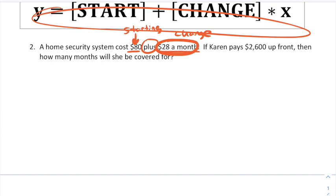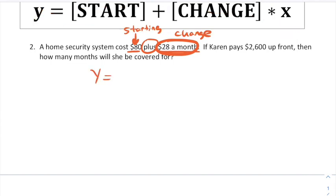So using our start plus change X model, we're going to write Y equals the starting amount, 80, plus the changing amount, 28, X. That's our equation to represent this situation.